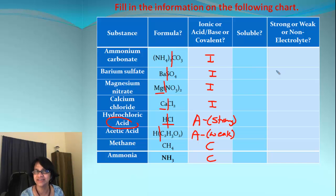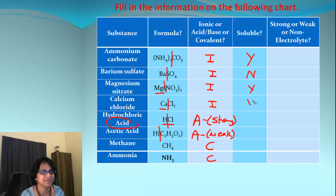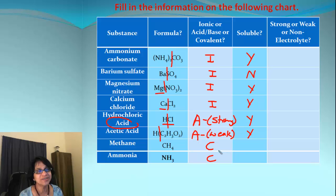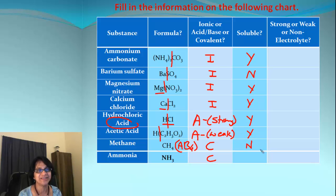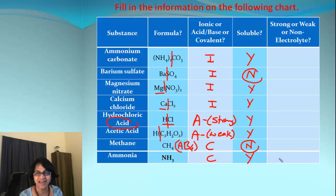Now let's look at solubility. For ionic compounds we predict solubility using the chart: ammonium carbonate is soluble, barium sulfate is not soluble, the others are soluble. Acids are always soluble. For covalent compounds we use Lewis dot structure — methane has an AB4 symmetrical (non-polar) structure, so since water is polar, methane is insoluble. Ammonia has an AB3 structure with a lone pair, making it polar, so ammonia is soluble.